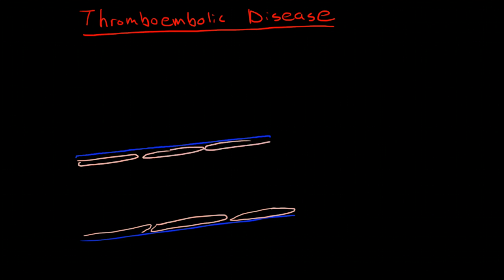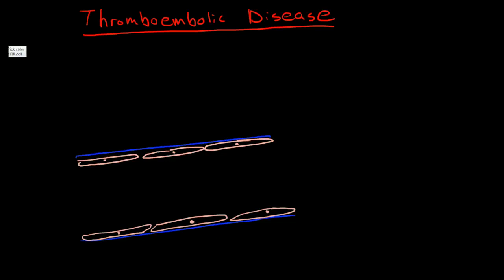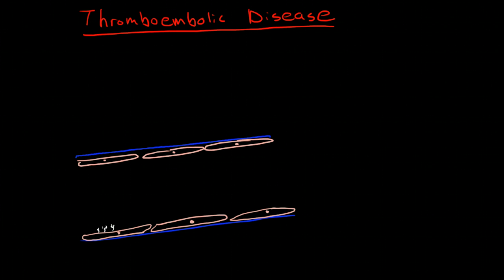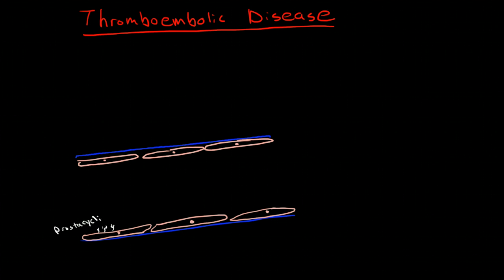Now in order to understand thromboembolic disease we need to talk about what prevents clots, what prevents thrombi from forming to begin with. There is a set of proteins that keep thrombi from forming, and that is a set of proteins expressed on endothelial cells. One of these proteins is prostacyclin, which is one of the prostaglandins, and this is expressed as a cell membrane protein on the endothelial cells.